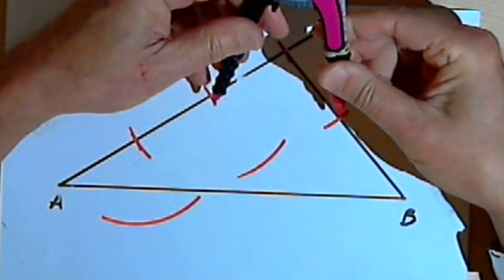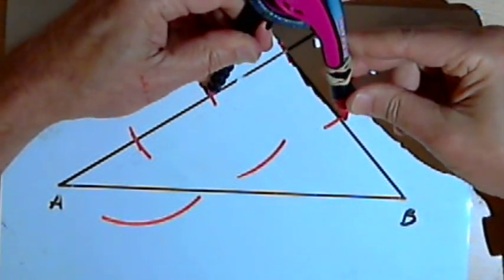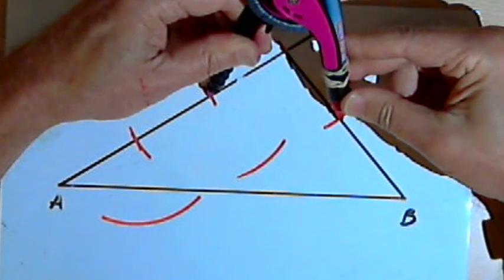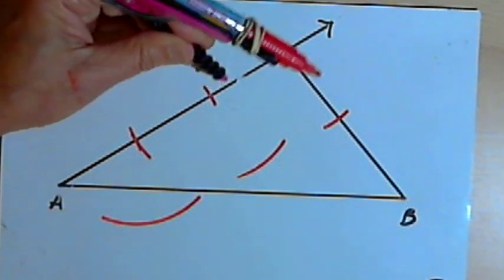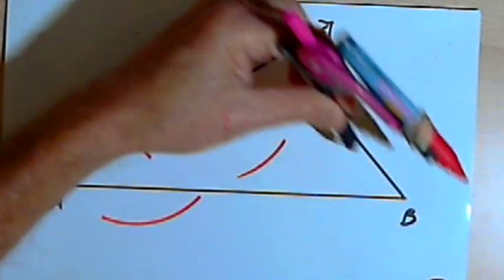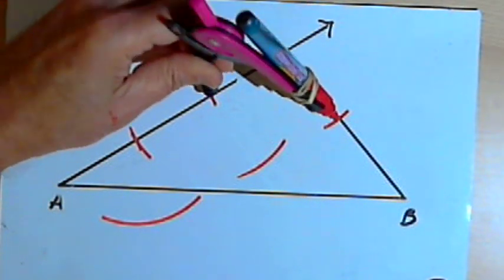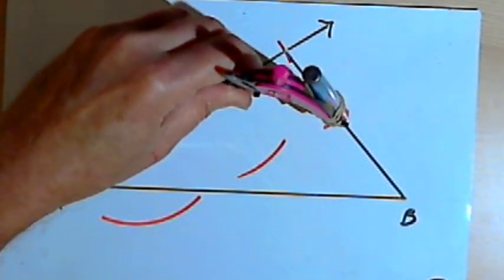Now I'm going to change the compass setting so that it measures the distance where I've cut through the ray and through the first of those parallel lines with my arc.